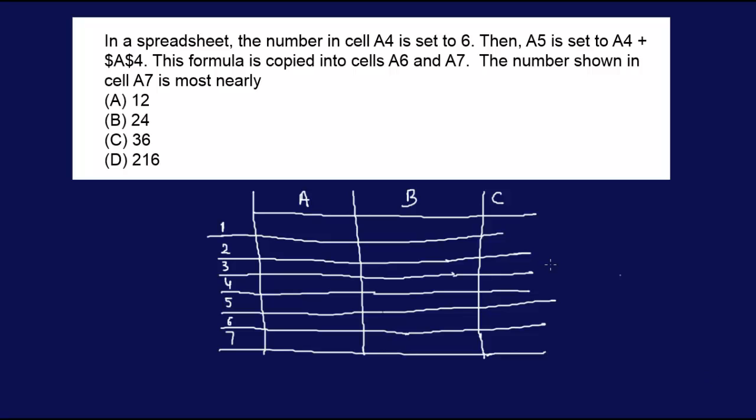This is another computer spreadsheet example. In a spreadsheet, the number in cell A4 is set to 6. Then A5 is set to A4 plus absolute designator $A$4.